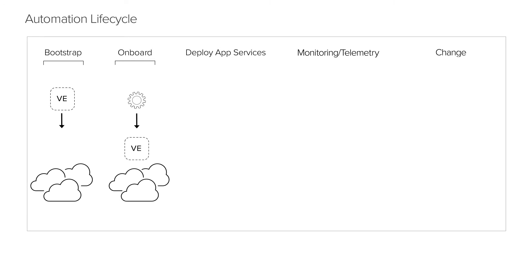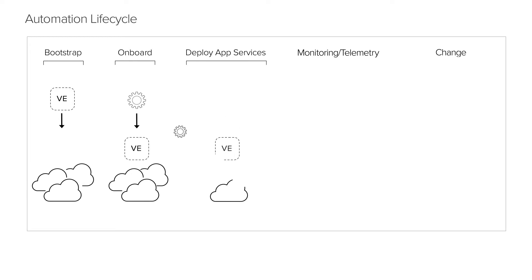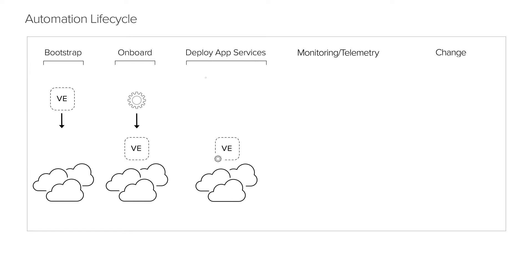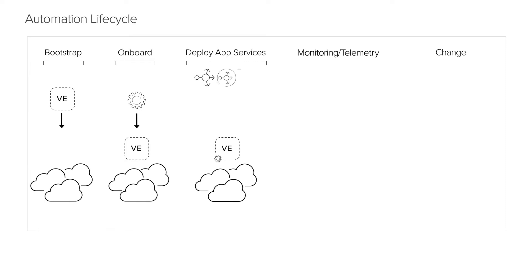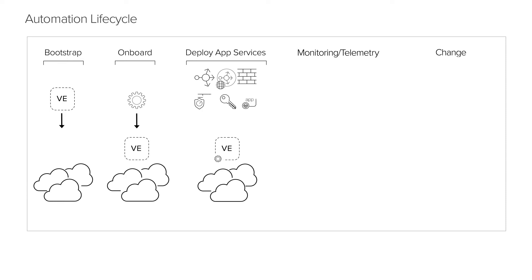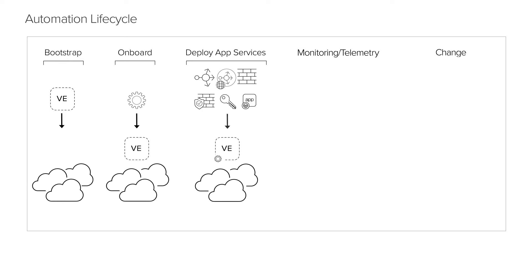Third in line is Deploying App Services. In this stage, BigIP is configured with Layer 4 through 7 services, including Local Traffic Management, Global Traffic Management, Security Policy Attachments, and more. This stage unlocks F5's core value.